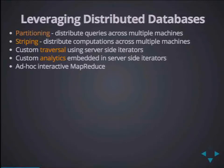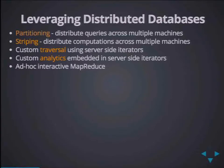Accumulo has an extension point called server-side iterators, which we leverage in GeoMesa to provide geospatial and CQL and E-CQL query semantics at the data rather than secondary scans. We can also embed custom analytics inside these server-side iterators — they essentially become ad hoc and interactive MapReduce-like computations.